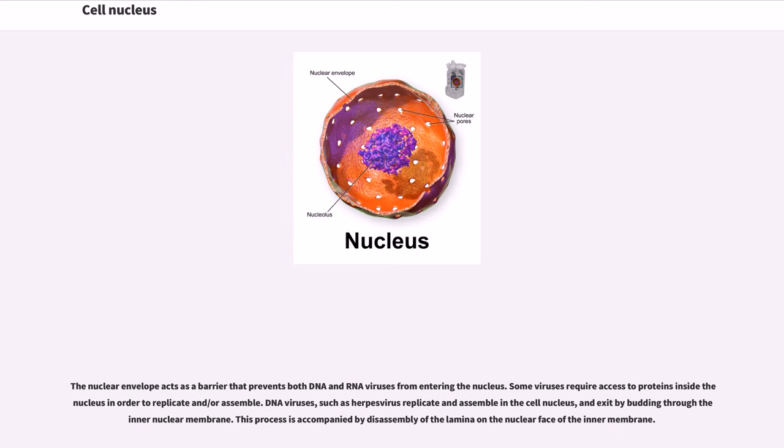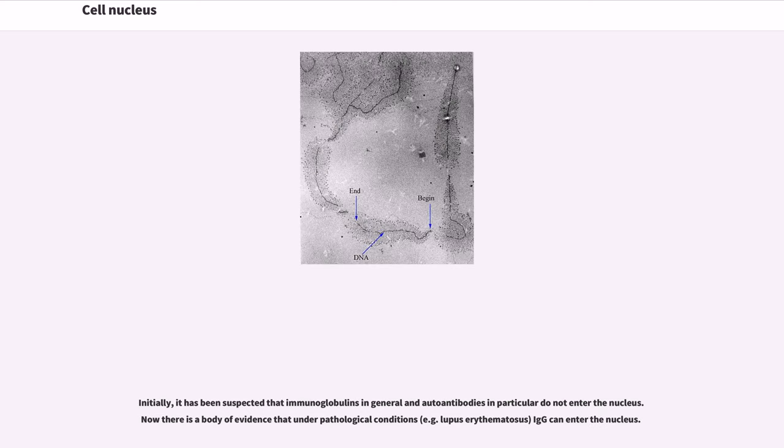The nuclear envelope acts as a barrier that prevents both DNA and RNA viruses from entering the nucleus. Some viruses require access to proteins inside the nucleus in order to replicate and/or assemble. DNA viruses, such as herpes virus, replicate and assemble in the cell nucleus, and exit by budding through the inner nuclear membrane. This process is accompanied by disassembly of the lamina on the nuclear face of the inner membrane. Initially, it has been suspected that immunoglobulins in general and autoantibodies in particular do not enter the nucleus. Now there is a body of evidence that under pathological conditions, for example lupus erythematosus, they can enter the nucleus.